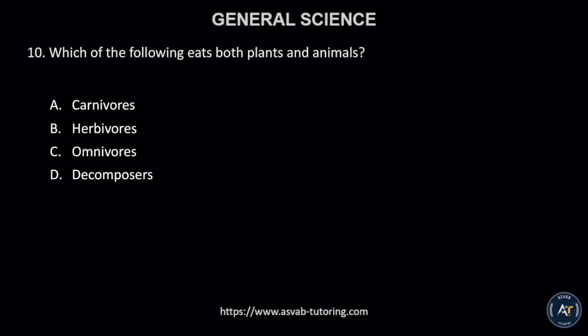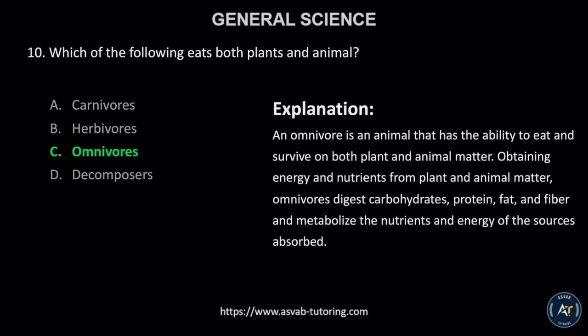Number 10. Which of the following eats both plants and animals? A. carnivores, B. herbivores, C. omnivores, or D. decomposers? The correct answer is letter C, omnivores. An omnivore is an animal that has the ability to eat and survive on both plant and animal matter, obtaining energy and nutrients from both. Omnivores digest carbohydrates, protein, fat, and fiber and metabolize the nutrients and energy of the sources absorbed.